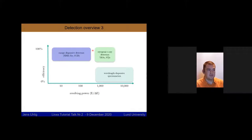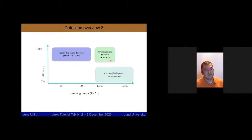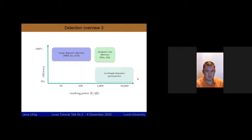To summarize detector types: energy dispersive detectors such as silicon drift detectors, CCDs, or germanium types give resolutions of about 100 eV at 6 keV — enough for XRF but not high-resolution science. Cryogenic detectors are very efficient with high resolution but are rather expensive. The third group, most likely used in the lab for high-resolution spectroscopy, is wavelength dispersive spectrometers.